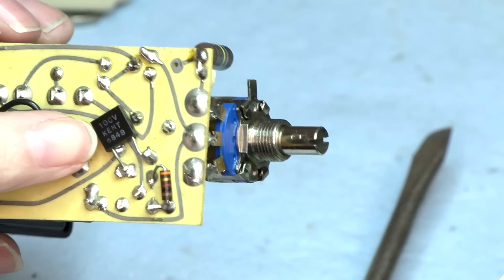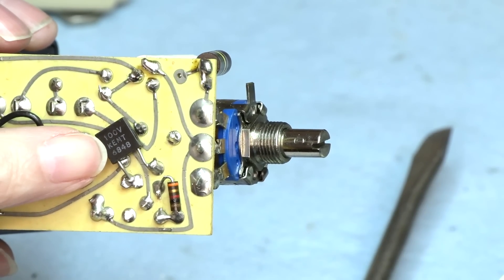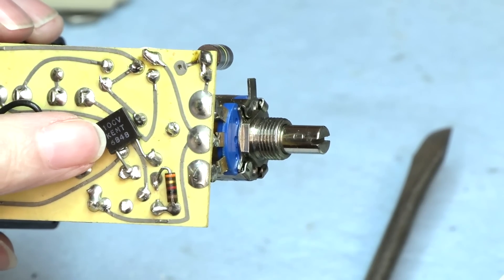That's a capacitor right there. Kent, 100 volt. It's got a part number on it.